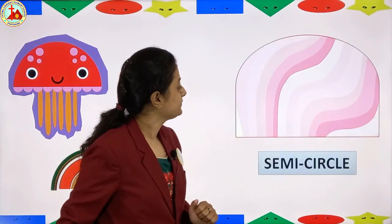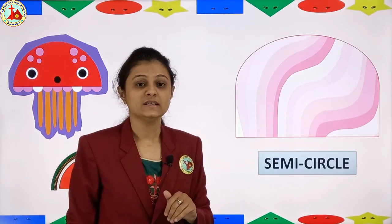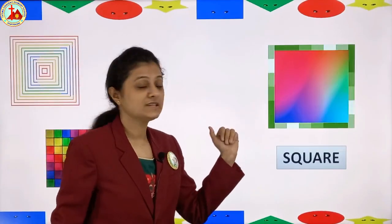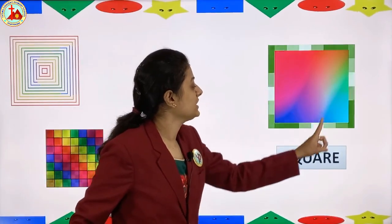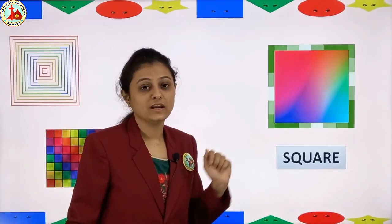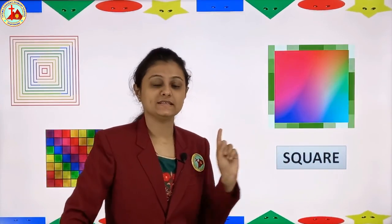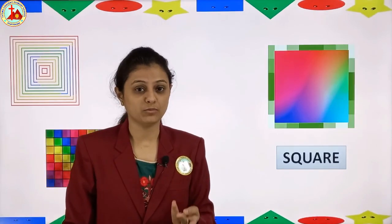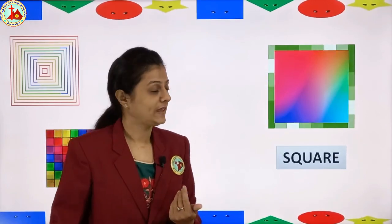Next is semi-circle. If you cut a circle in half, it is a semi-circle. Next shape is square. All four sides of a square are equal — none is long, none is short; all are the same size. Examples of square shapes include the book, the small table, the chess board, and the carom board.